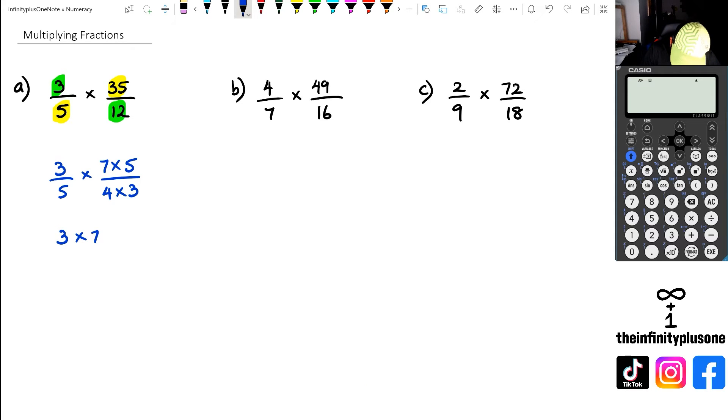So you would rewrite this as 3 times 7 times 5, over 5 times 4 times 3. Now at this point, what you can do is you can look at the common factors. The common factors is we've actually got 3 and 3 as a common factor. And if we do 3 divided by 3, that's 1. So in other words, what you can do is you can kind of cancel them out.